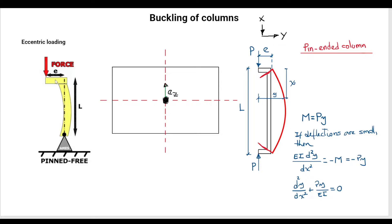When we talk about eccentricity, we're talking about a small distance away from the central axis of the column — not that far away, but at least a small distance. So, what happens then? How does this change in the point of application of the force influence the behavior of the column in buckling and in compression?